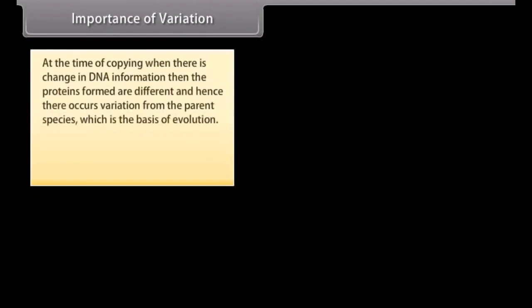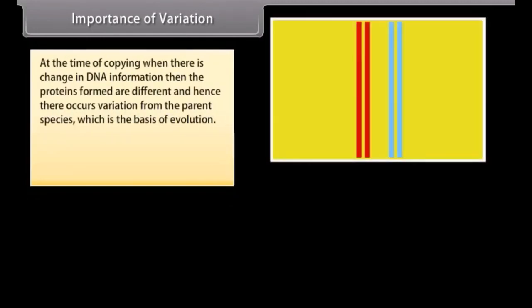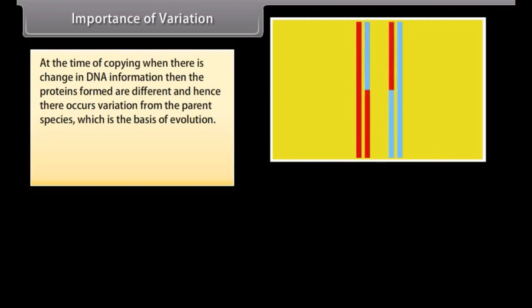Importance of variation. At the time of copying, when there is a change in DNA information, the proteins formed are different, and hence there occurs variation from the parent species, which is the basis of evolution.